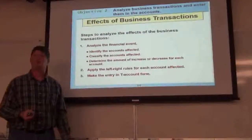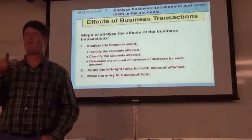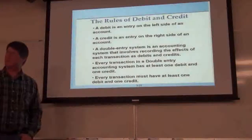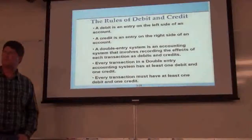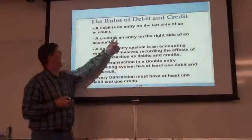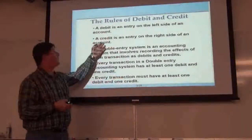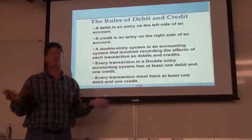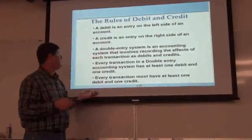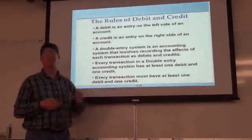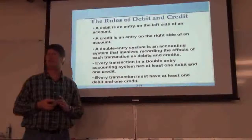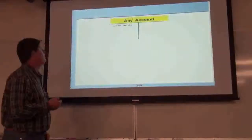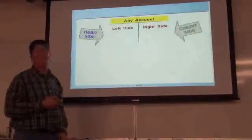This is simple, but I want to really drive this home because this is the real foundation of accounting that you've got to know. Debits are always on the left side of an account — always. Credits are always on the right side of an account. Double-entry accounting: for every debit there must be a credit, and for every credit there must be a debit. Every transaction must have at least one debit and one credit. If you ever have an entry with just a debit and no credit, or vice versa, you've got a problem — you will be out of balance.